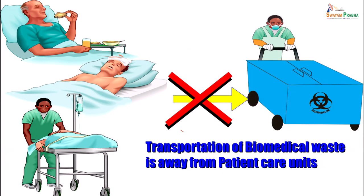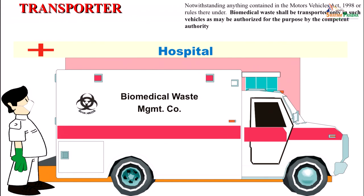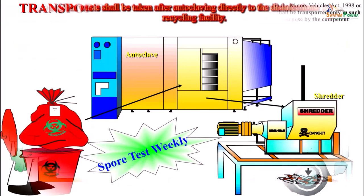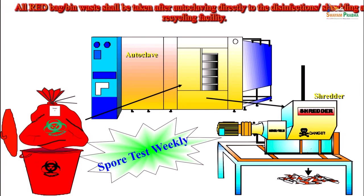Waste should not be transported near patient care units; it should be transported away from them, in designated vehicles with hazard symbols. All waste is finally taken to the autoclave, autoclaved, and taken for shredding. Spore testing is done in the autoclave to confirm it is working properly, and the waste is finally shredded.